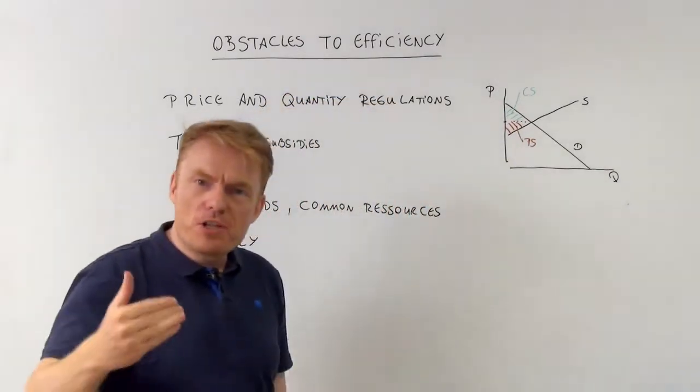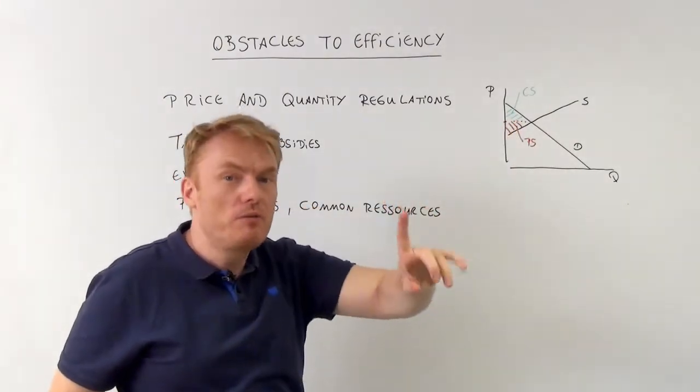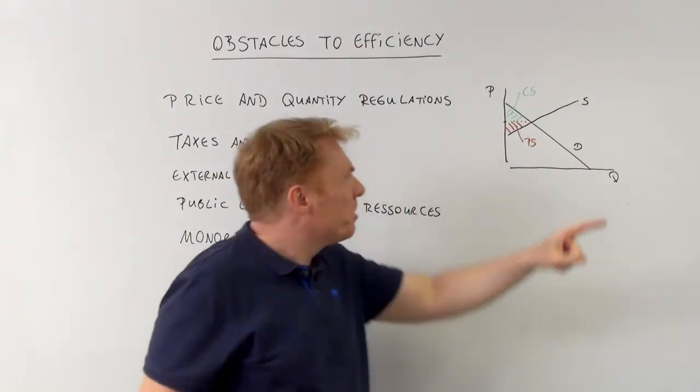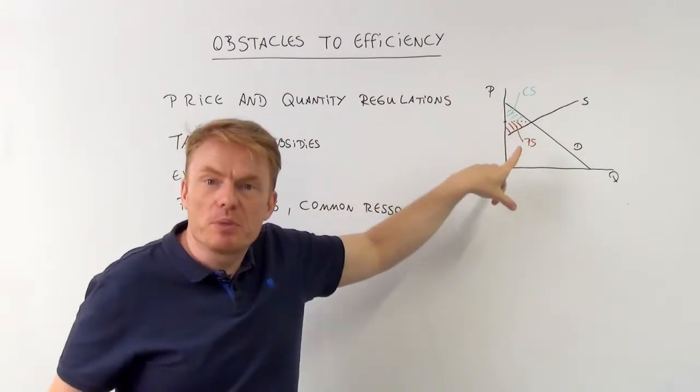Remember this, with an efficient market, we have a maximum of social welfare. Social welfare is the sum of consumer surplus, the green area, and producer surplus, the red one.